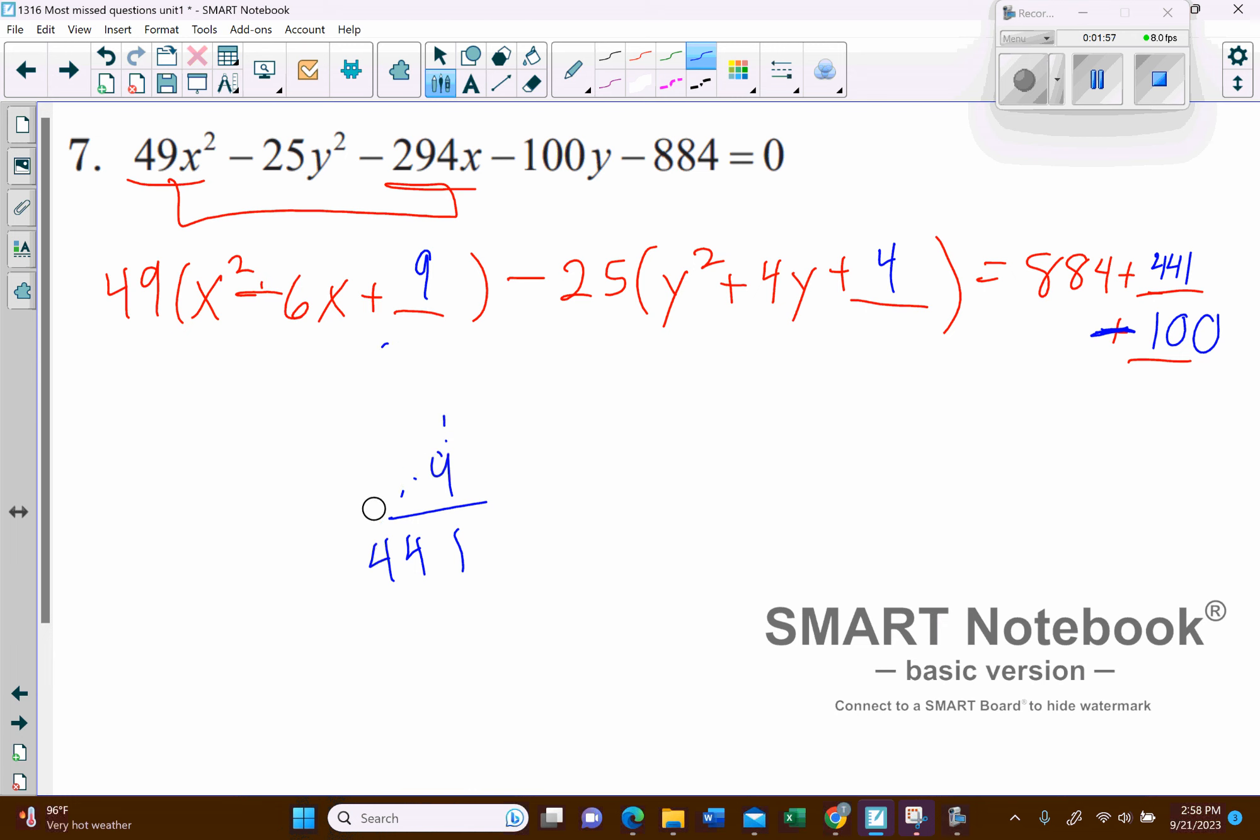And so let me erase this, so I have room to continue the process. Okay, and so now it's time to clean these two parts up right here. So let's see, we're going to have 49, and then this is going to factor into x minus 3 squared, then minus 25, and then this is going to be y plus 2 squared.